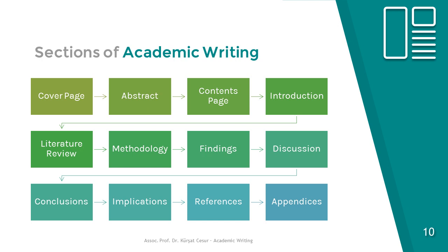Here, we have a brief look at the sections of academic writing. The sections are: cover page, abstract, content page (mostly in thesis), introduction, literature review, methodology, findings, discussion, conclusion, implications and recommendations, references, and appendixes.